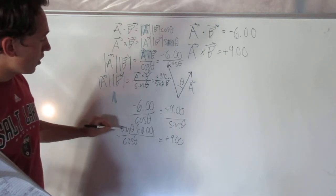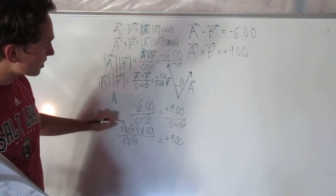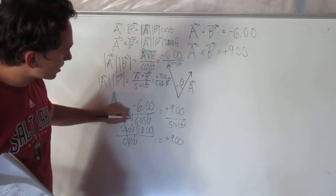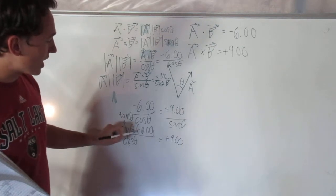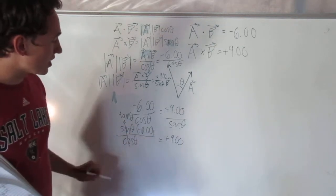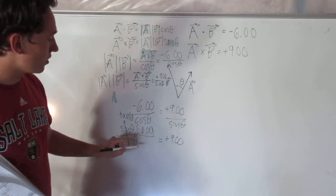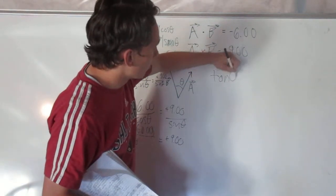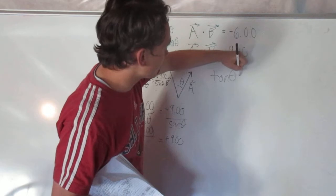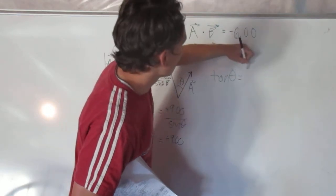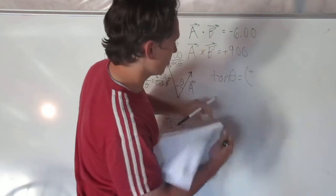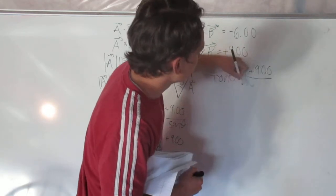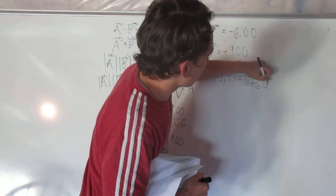Now if you know your angle identities, this is actually the same thing as tangent theta. That's very nice and we can divide both sides by negative 6.00, so we get tangent theta equals positive 9.00 over negative 6.00.